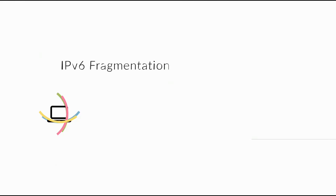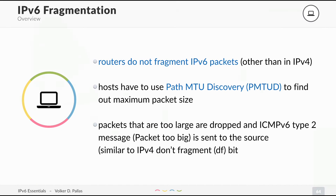In IPv6, it's a whole different story. Routers do not fragment IPv6 packets, which was the case with IPv4. Hosts have to do that. There is a new thing called PathMTU Discovery, or PMTUD, which is used to find the maximum packet size.